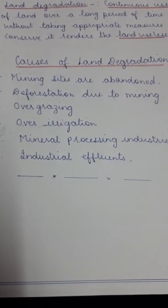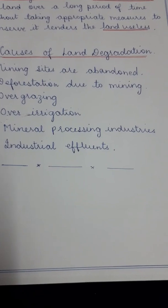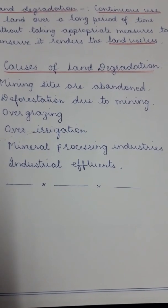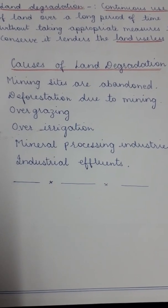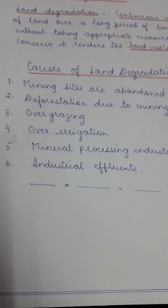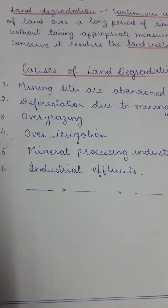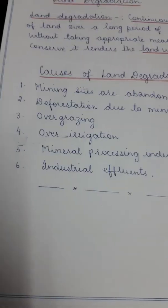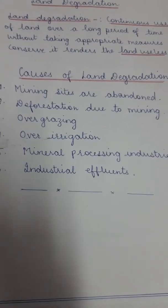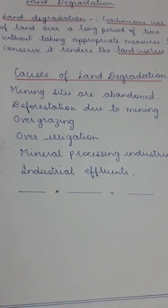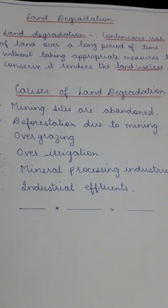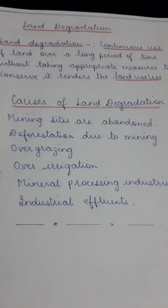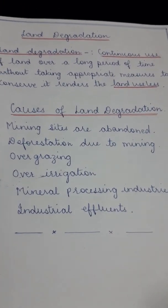The fifth cause is mineral processing industries, which give out fine dust that makes the land infertile. The sixth point is industrial influence — toxic material from industries is discharged without any kind of treatment, which renders the land useless.